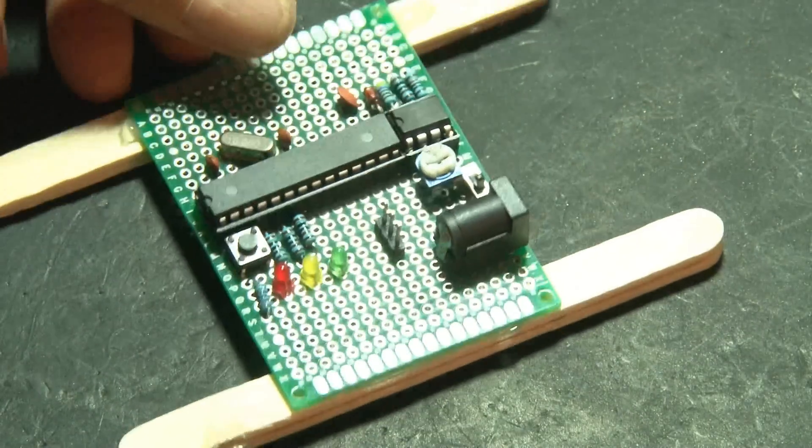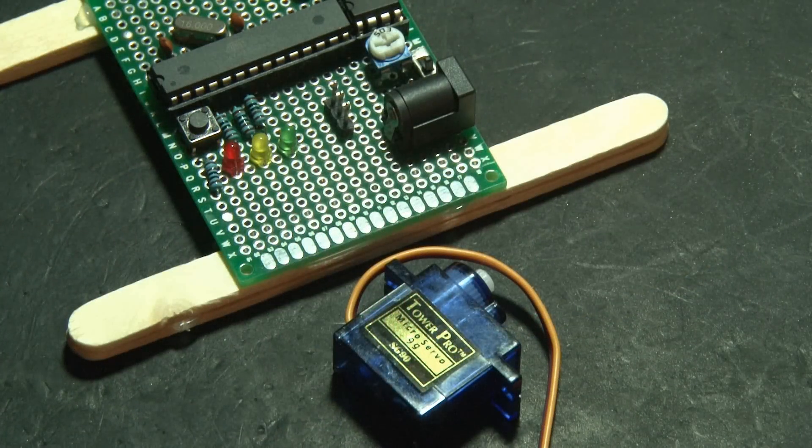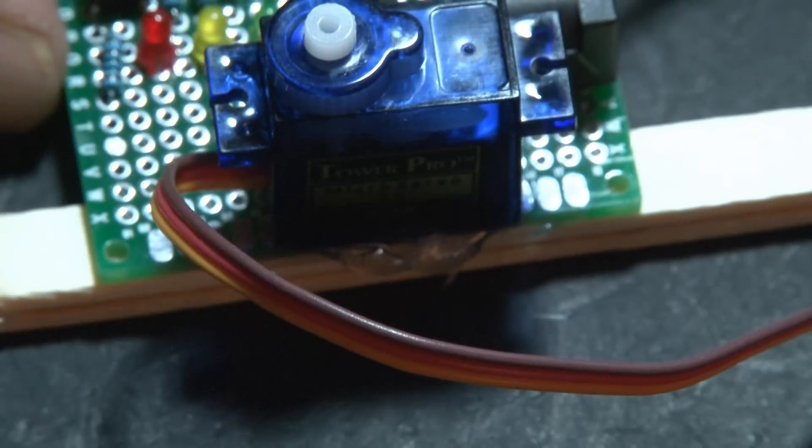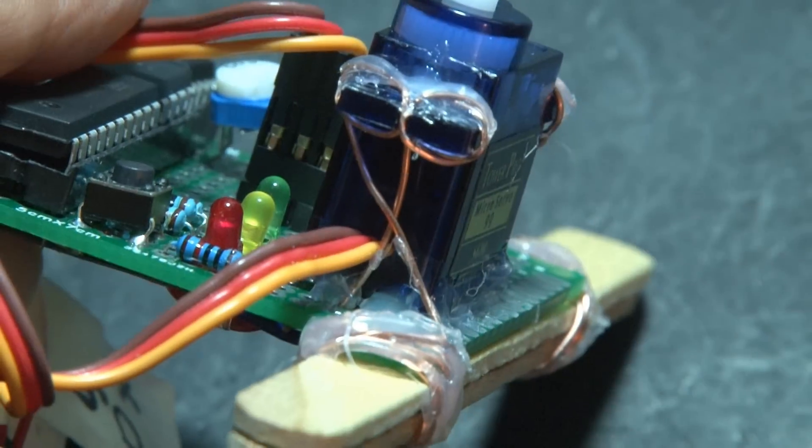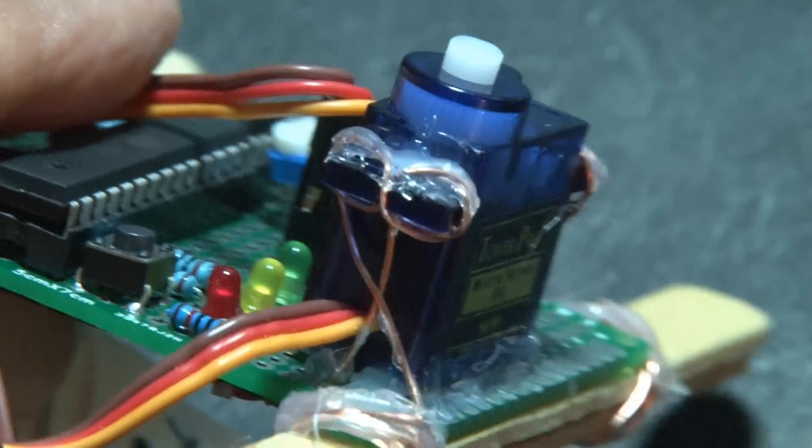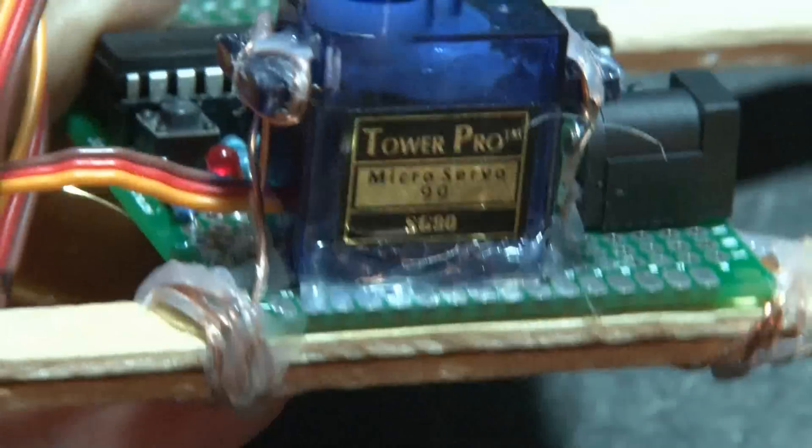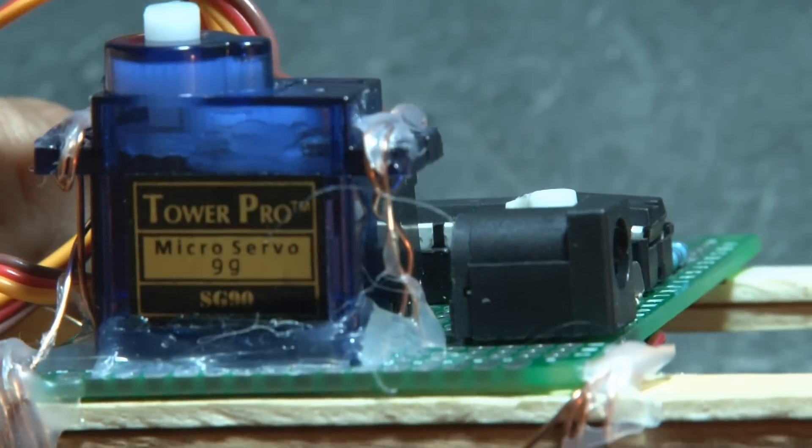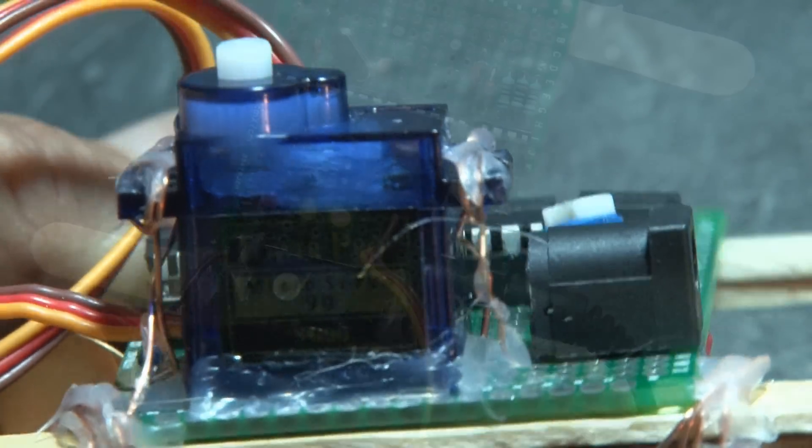Now it's time to mount our servo motor. This is what's going to actually turn our mechanical arm. So we'll hot glue that in place, and then also for some added security, I took some copper wire and ran it around the ends of the servo motor and around the popsicle sticks and hot glued it all together.